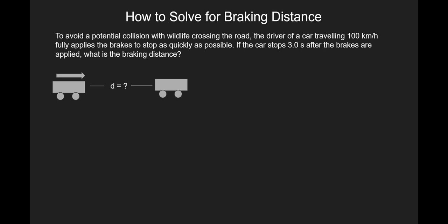From that diagram and from reading the question, we can start to write down our givens. We know our initial velocity is 100 kilometers per hour, our final velocity because the car comes to a stop is zero, the time it took for all this to happen is 3 seconds, and the distance needed before it stopped is what we're looking for.